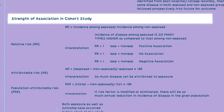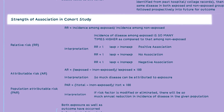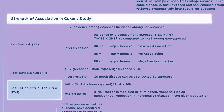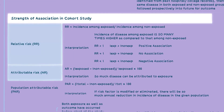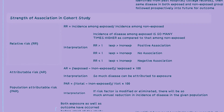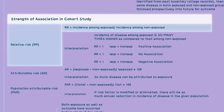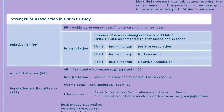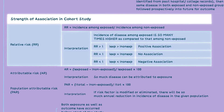An important part of any study is determining the strength of association. For cohort studies, it is measured in terms of relative risk and attributable risk. Relative risk, or RR, is calculated as incidence among exposed divided by incidence among non-exposed. RR greater than 1 suggests a positive association, RR equal to 1 indicates no association, and RR less than 1 indicates a negative association.